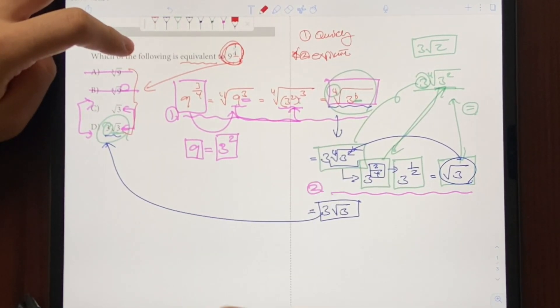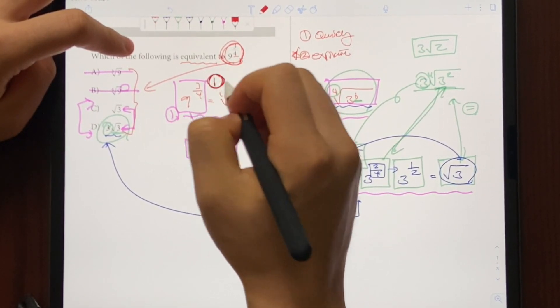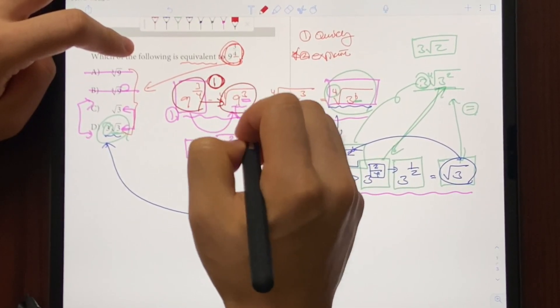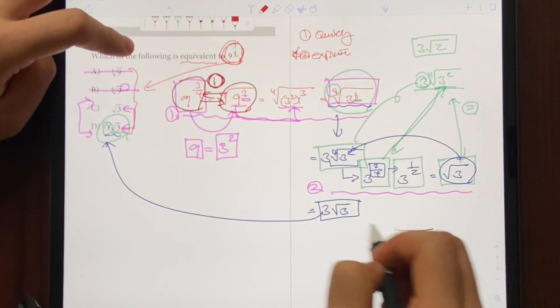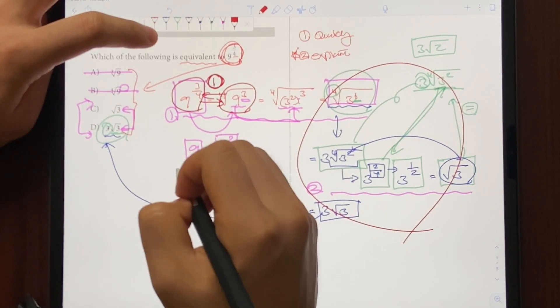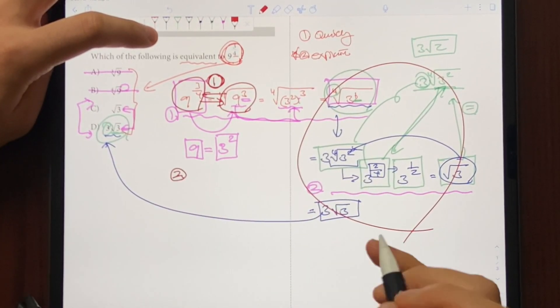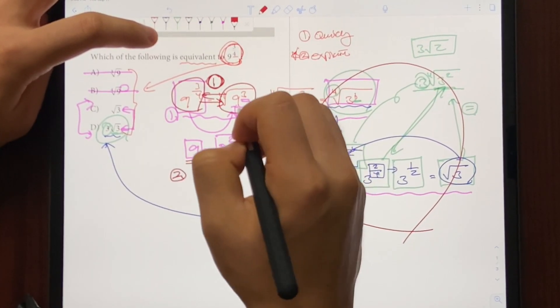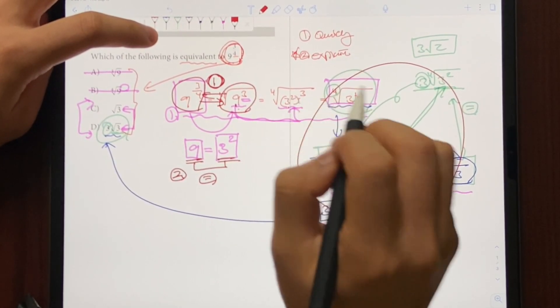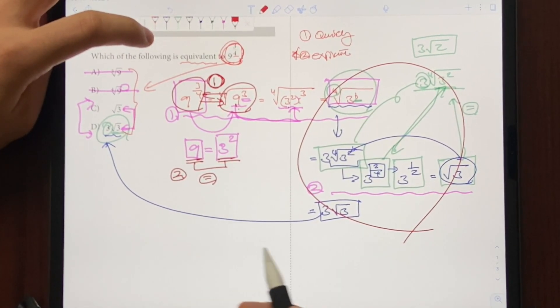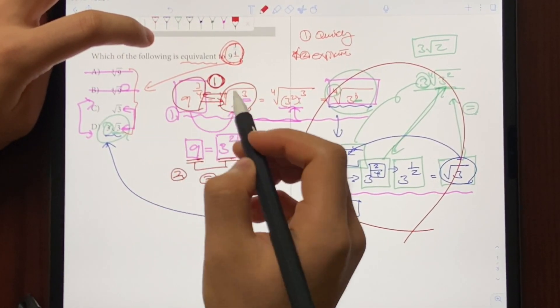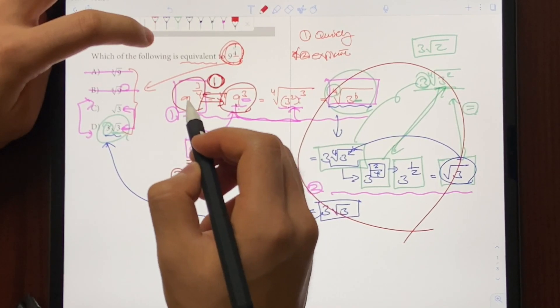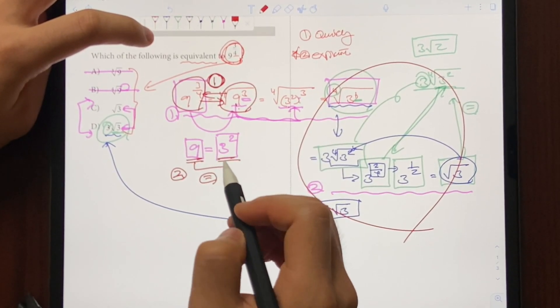So this question was testing you on two main concepts. First one was your ability to convert exponents into radicals and radicals back into an exponent like you did right over here. And the second concept was your ability to identify the equivalent form. See, 9 is same thing as 3 to the second power. And because they are the same thing, whether you have 9 in there or 3 to the second in there, it's going to be the same thing. So next time you see a question where you have to convert exponents back into radicals, first, know how to convert radicals into exponents and vice versa, and second, finding the equivalent form.